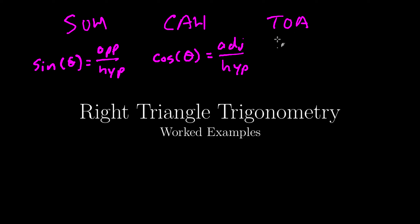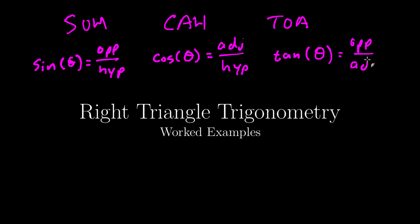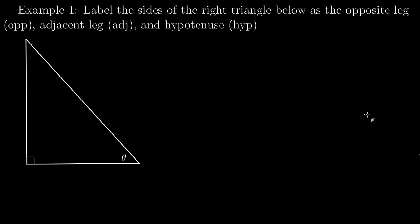And TOA — T stands for the tangent of a given angle in a right triangle — will equal the opposite leg divided by the adjacent leg. So diving right in: label the sides of the right triangle below as the opposite leg, adjacent leg, and the hypotenuse.